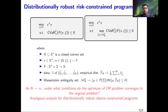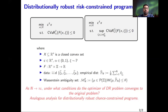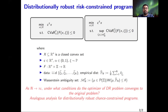Such a distributionally robust optimization problem has good out-of-sample guarantees for approximating the original risk constraint problem. We analyze what happens as the number of samples goes to infinity. We derive conditions under which, as n tends to infinity and the radius of the ambiguity set shrinks at a certain rate, the optimizers of the distributionally robust problem converge to the optimizers of the original risk constraint problem. This justifies the distributionally robust approach even when the number of samples is large. We also conduct the same analysis for chance constraint problems.